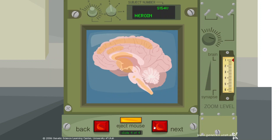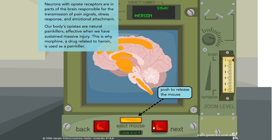Neurons with opiate receptors are in parts of the brain responsible for the transmission of pain signals, stress response, and emotional attachment. Our body's opiates are natural painkillers, effective when we have sustained massive injury. This is why morphine, a drug related to heroin, is used as a painkiller.